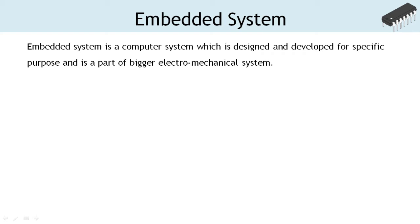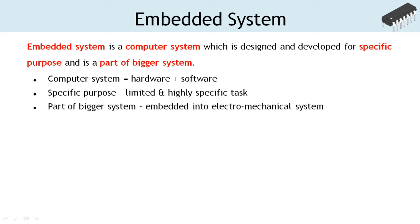An embedded system is a computer system which is designed and developed for a specific purpose and is a part of a bigger electromechanical system. There are three key points in this definition. Computer system means it is a combination of hardware and software. The purpose or the functionalities of such a computer system is limited and highly specific, and mostly it is a part of a bigger system which has electrical and mechanical components.